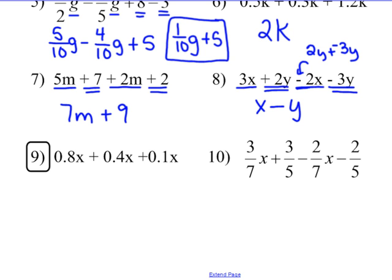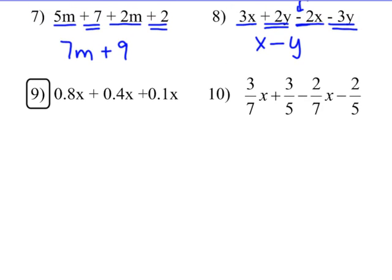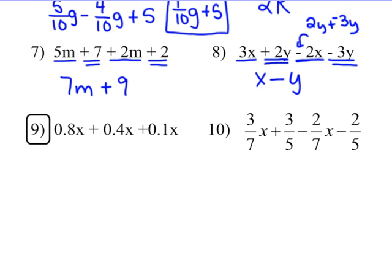Number 9 is worked out in the book on page 148, similar to number 6 in that all terms are like: 8 tenths x plus 4 tenths x plus 1 tenth x. Line up your decimal points carefully. 8 and 4 is 12, and 1 more makes 13 — carry the 1, bring down the decimal point — giving 1 and 3 tenths x. A common student mistake is to put a power on the variable, but it's just x — 1 and 3 tenths x.